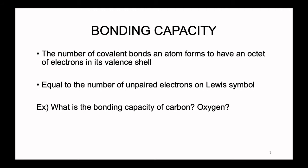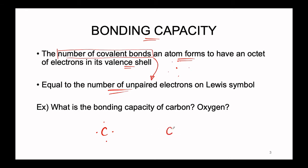So how do we know where to start? The bonding capacity is equal to the number of covalent bonds that an atom can form to have an octet around its valence shell. We can determine this by looking at the number of unpaired electrons in your Lewis symbol. For carbon, which has four valence electrons, we place four electrons around our carbon. For oxygen, which has six valence electrons, we draw six electrons — notice that we have two pairs and two that are unpaired.